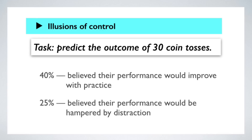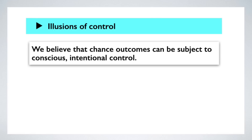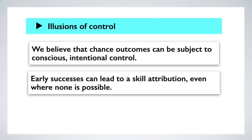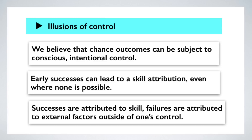The upshot of this line of research is fairly discouraging. We can easily come to believe that chance outcomes can be subject to conscious, intentional control. Early successes and early wins can lead to an attribution of skill — the belief that successes are due in part to the exercise of skill — even when outcomes are genuinely random and there is no correlation between anything we do and the actual pattern of outcomes. There is also a tendency to explain successes as resulting from the exercise of skill and failures as resulting from external factors outside of a person's control. No one is immune to these illusions of control.